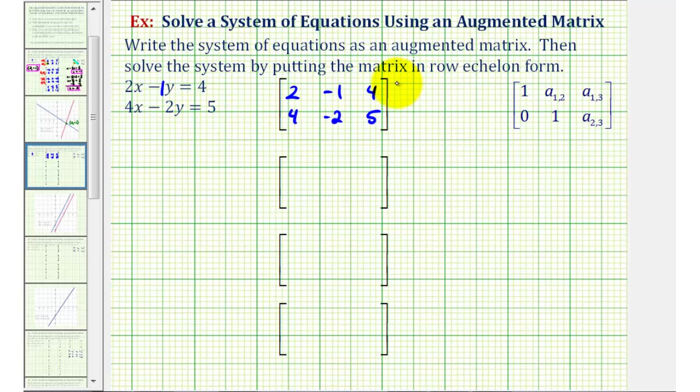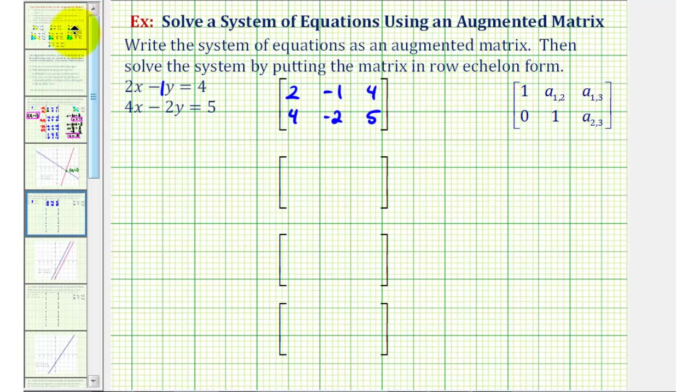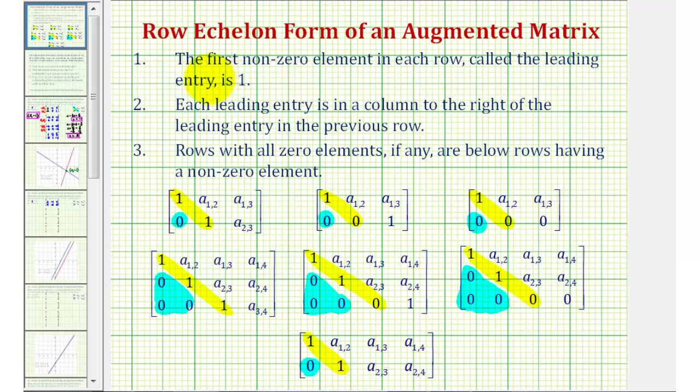Now let's go ahead and review what it means for a matrix to be in row echelon form. The first non-zero element in each row, called the leading entry, is one.